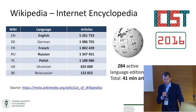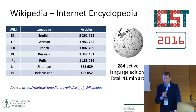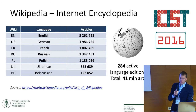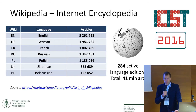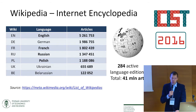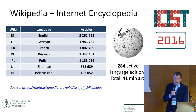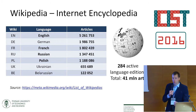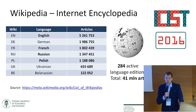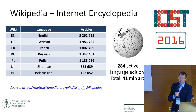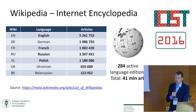First of all, about Wikipedia. Currently there are almost 300 active Wikipedia language editions. The total number of articles is over 40 million. The biggest is the English version of Wikipedia, which consists of over 5 million articles. Wikipedia is one of the most important sources of knowledge in the world, and every day the number of articles in each language increases.